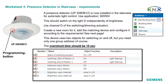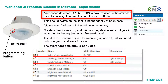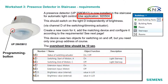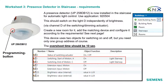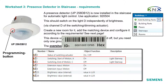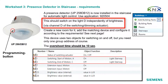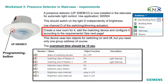Presence detector in staircase — requirements. A presence detector UP258DB12 is now installed in the staircase for automatic light control; use application 920504. As it is a new device, you have to download a new individual address — use number 13. Depending on how you can access the device, you can either press the programming button or use the serial code from the barcode sheet. Create a new room for it: the staircase.